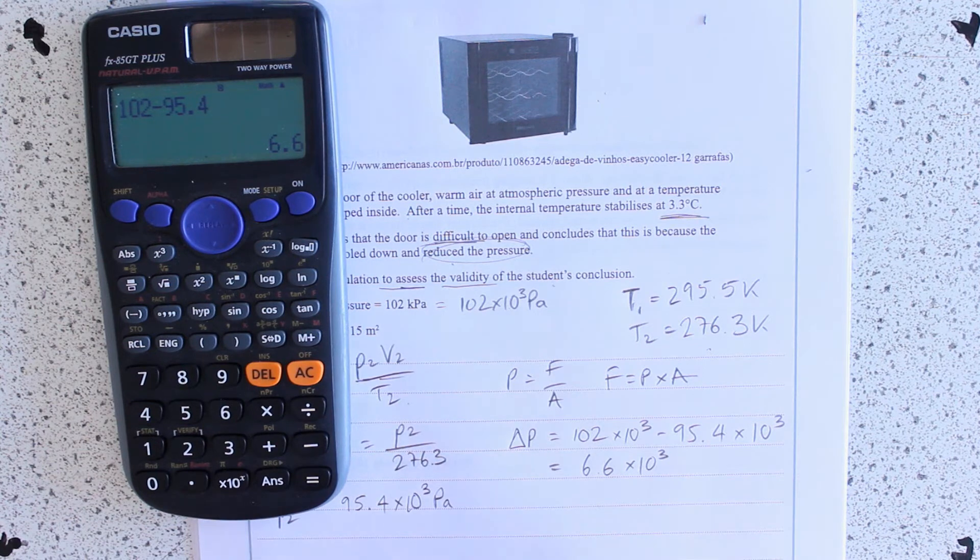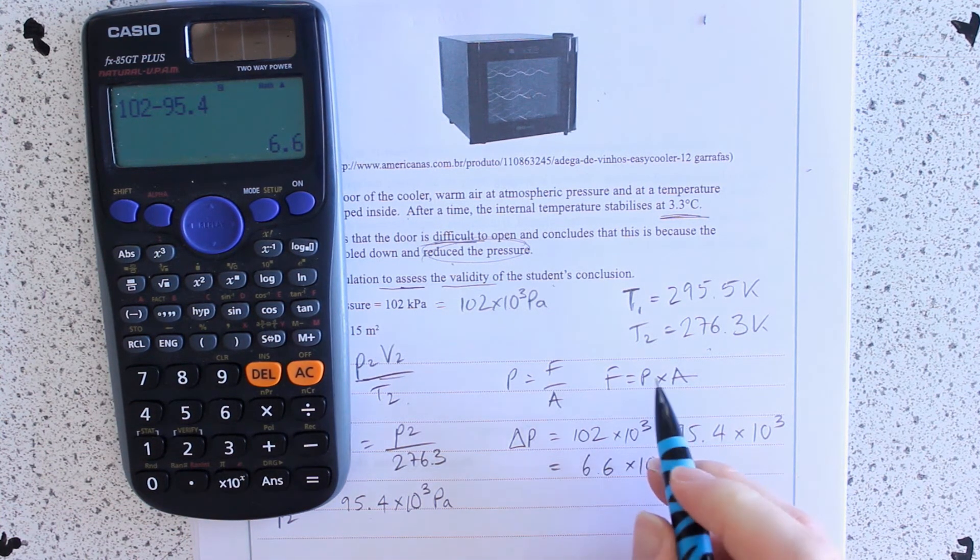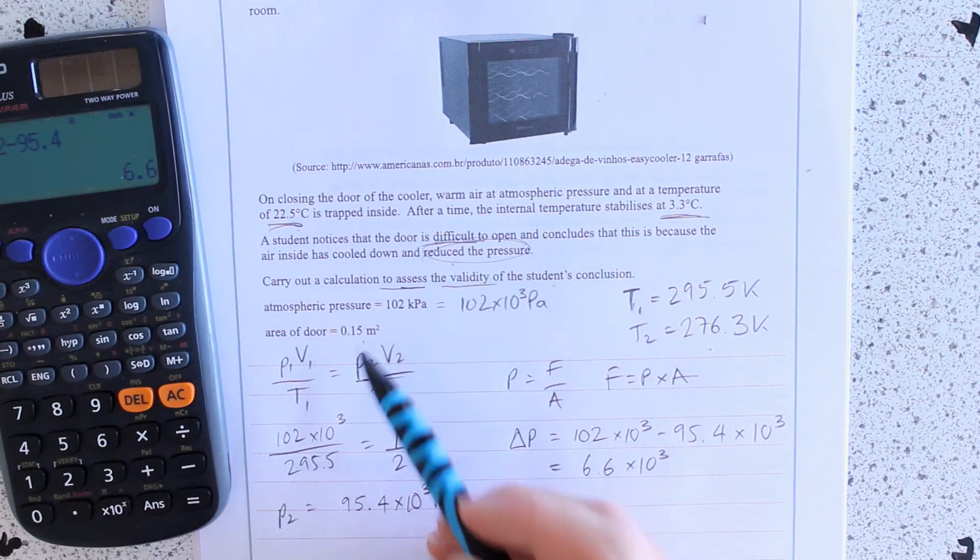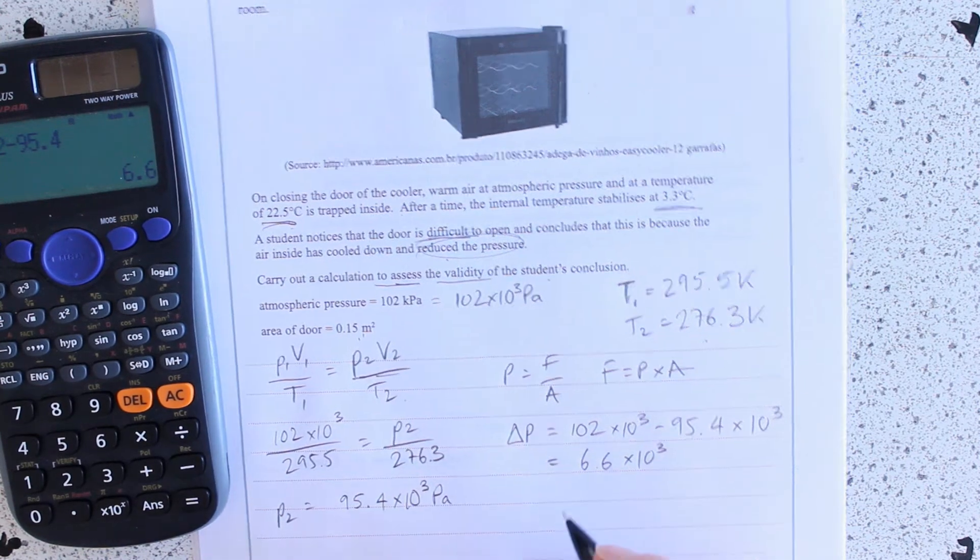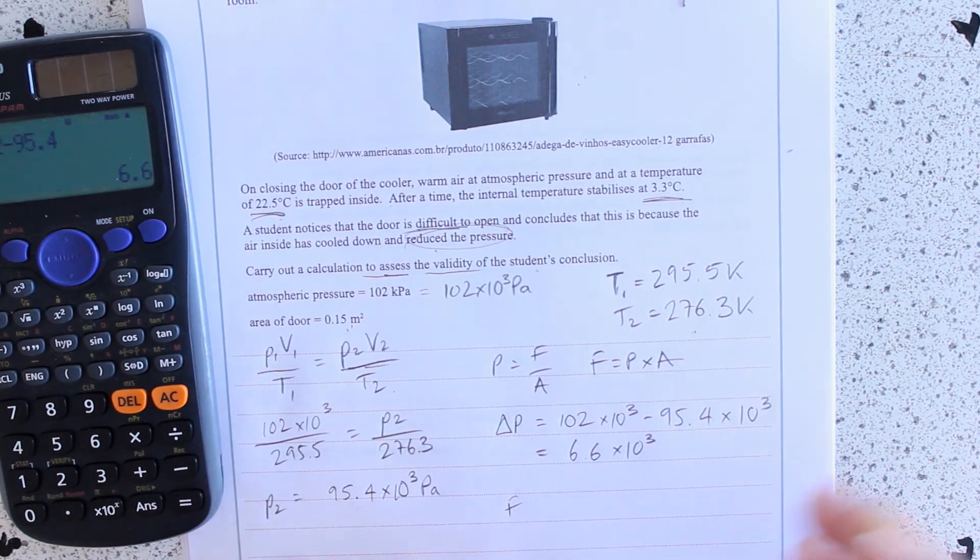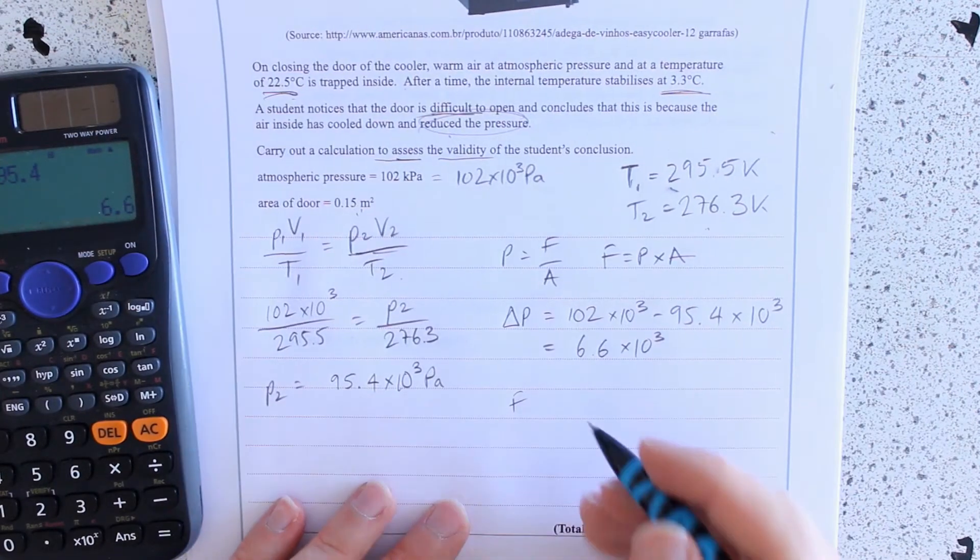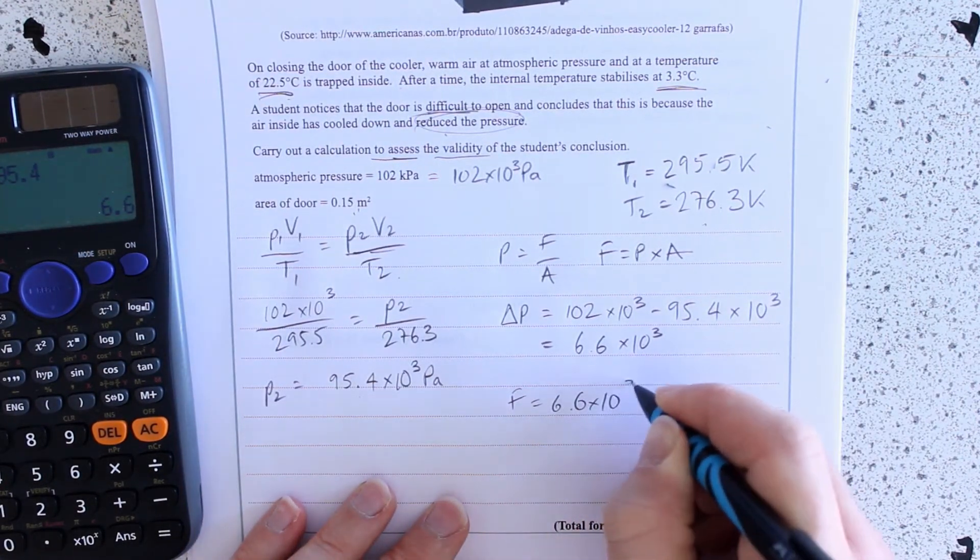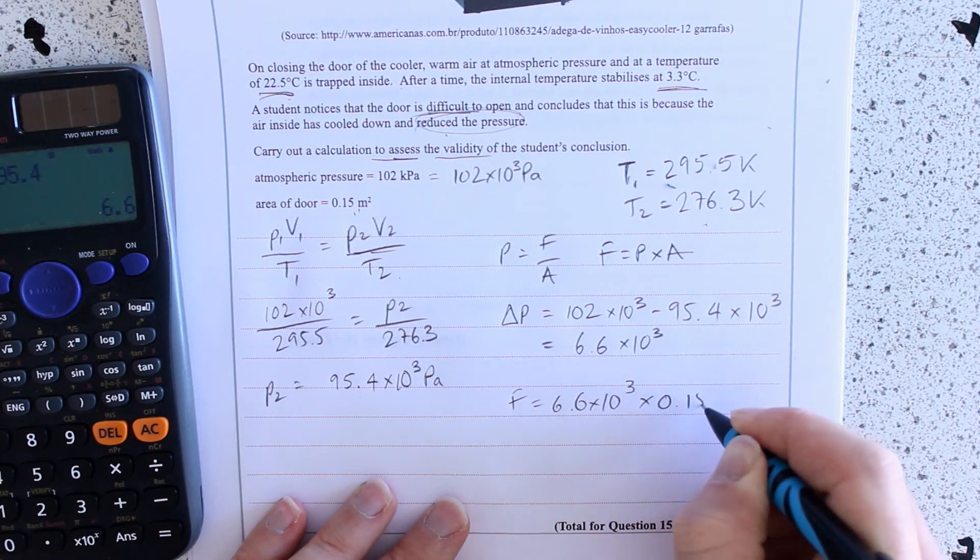So I'm just going to have to multiply that by the area, which I'm given in meters squared, so that's fine. So F is 6.6 times 10 to the 3 times 0.15.